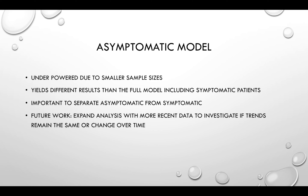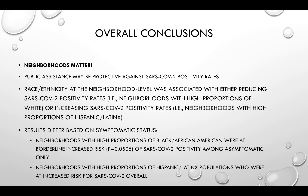Our future work would expand this analysis with more recent data and investigate trends over time, which is very important with an evolving infectious disease such as COVID-19. Our overall conclusions are that neighborhoods matter and are extremely important in public health; public assistance may be protective against SARS-CoV-2 positivity rates; and race and ethnicity was associated with either reducing SARS-CoV-2 positivity — for neighborhoods with higher proportions of white individuals — or increasing it, for neighborhoods with higher proportions of Hispanic or Latinx individuals. Results also differed by symptomatic status, with neighborhoods having higher proportions of Black and African-American residents borderline at increased risk among asymptomatic only, with a p-value of 0.0505.